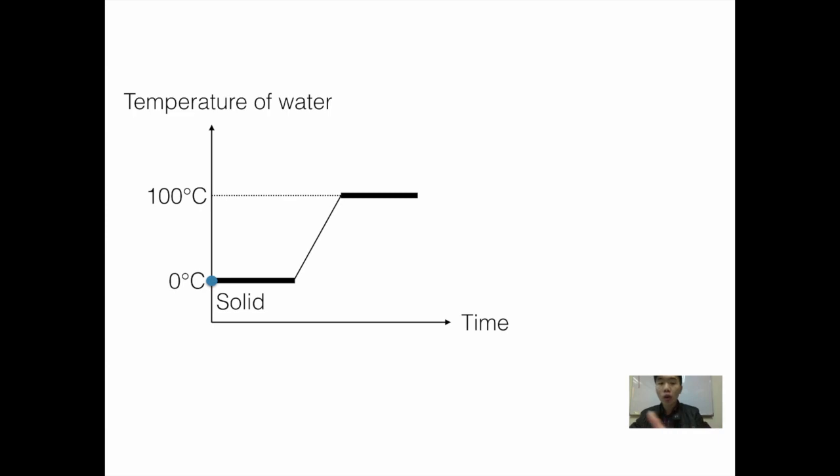So what are the states at the different points in time of the graph? Initially, the water is at 0 degrees Celsius in the solid state. Subsequently, it's going to be part solid plus liquid. Until all the solid has been converted to liquid, does the temperature start to increase.